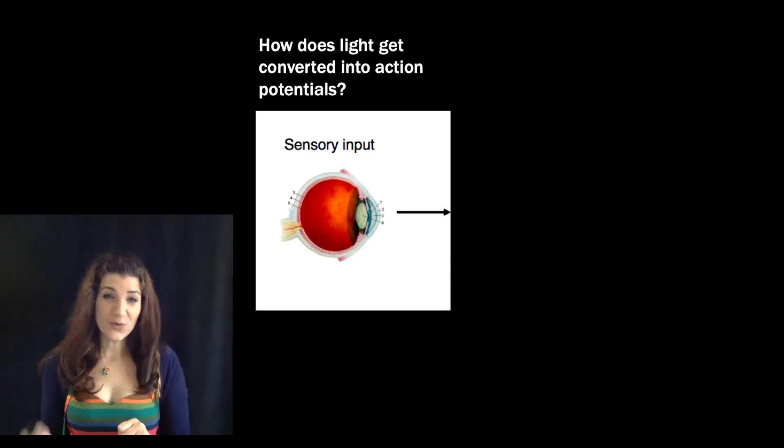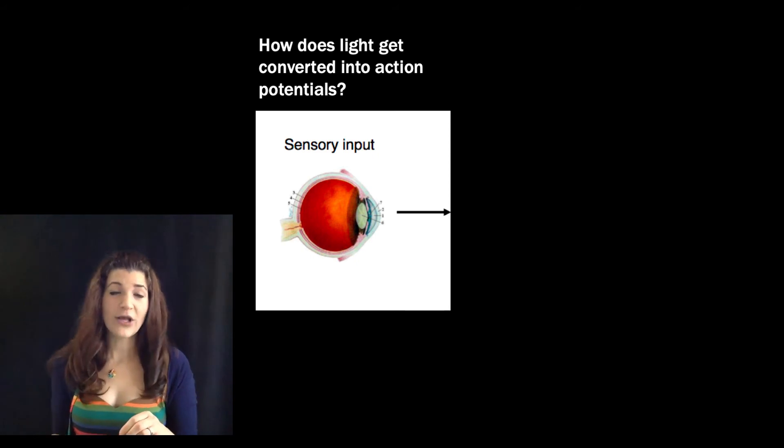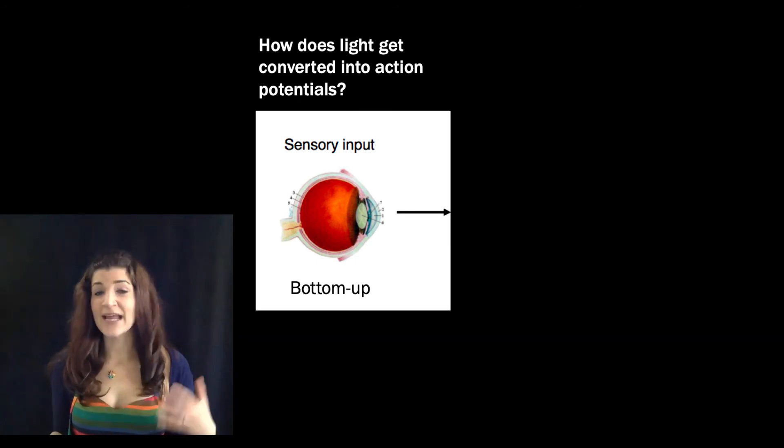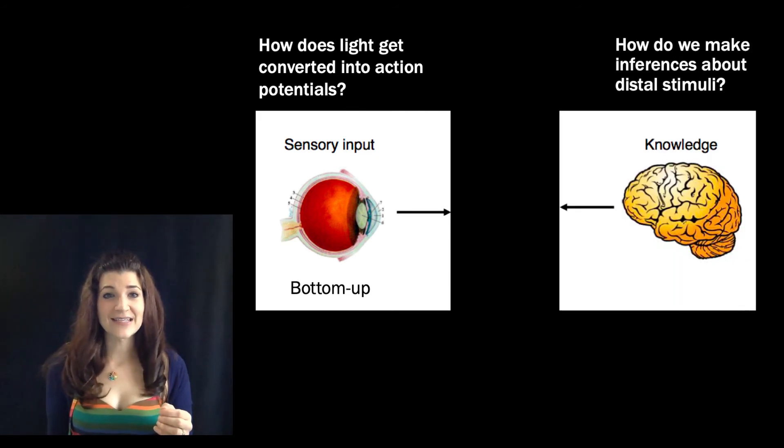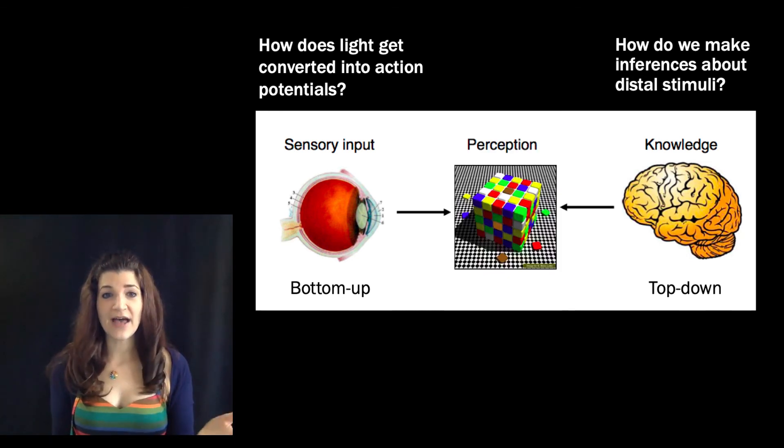So to summarize, the sources of information that psychologists are interested in: we've got the sensory input, the action potentials coming from the eyes heading up to the brain, the raw neural code that represents the proximal stimulus. We call that the bottom-up input. We've also got our inferences based on experience and expectations, the guesses that we're making about what's out there, the way we go beyond the bottom-up input. We refer to that as top-down information. And both of these sources of information enable us to arrive at a perception.